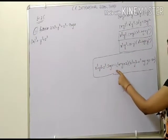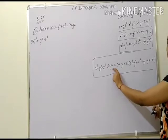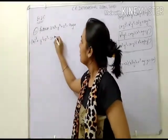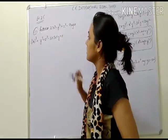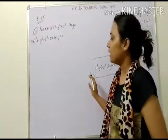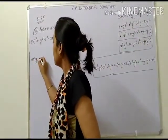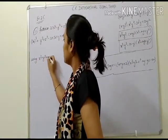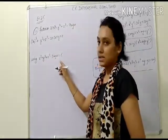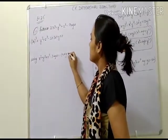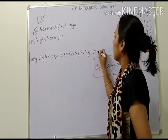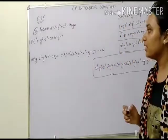Then minus 9xyz is equal to minus 3 into 3x into y into z, since the formula has minus 3xyz where x is 3x, y is y, and z is z. Using the identity with x replaced by 3x, y by y, and z by z. Comparing, x plus y plus z becomes 3x plus y plus z.